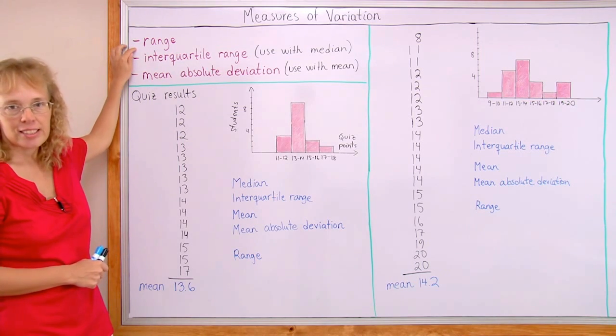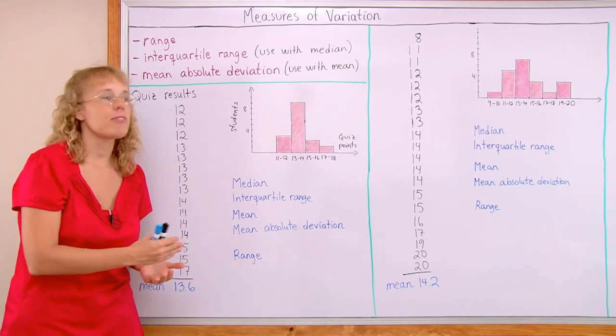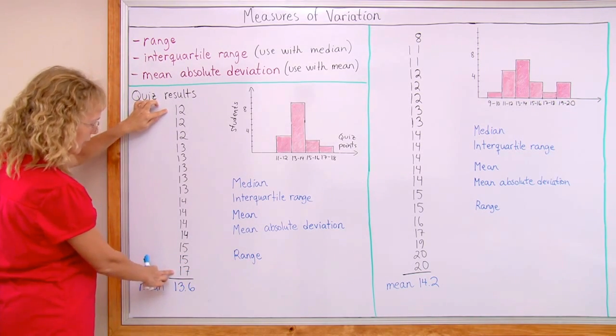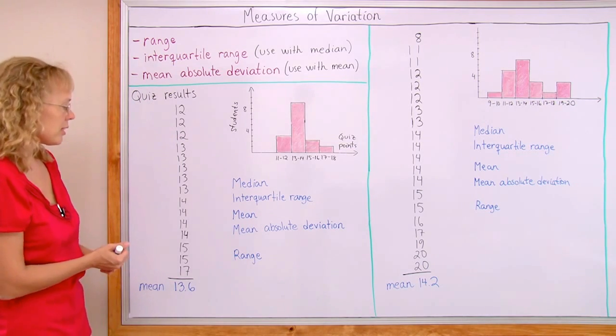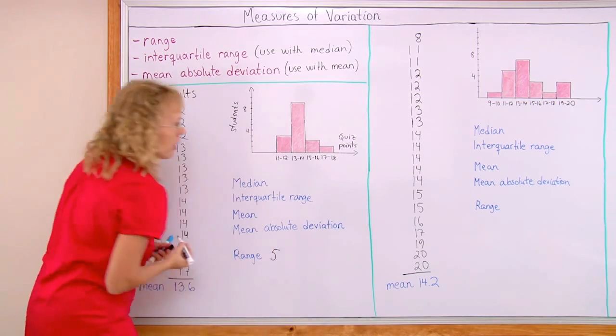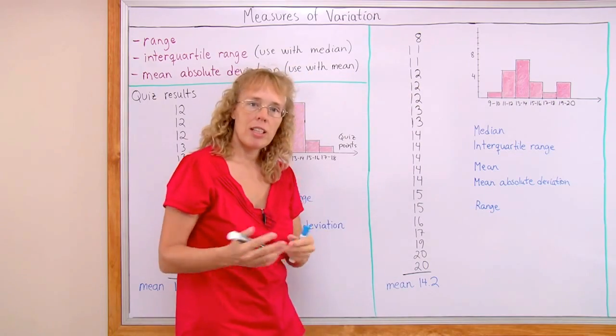Now, range is the easiest. It is basically just the difference between your minimum and maximum value. So you look at the minimum and the maximum, 12 and 17 in this case, and subtract. And so that is the range. So this is 5. Over here, minimum 8, maximum 20. So the range is 12.